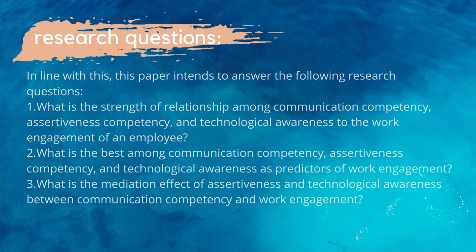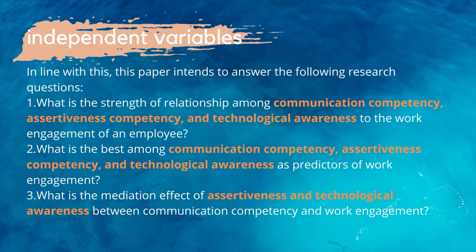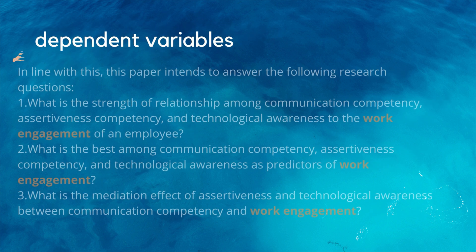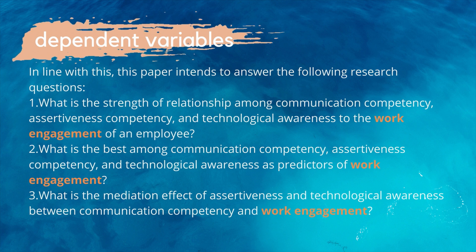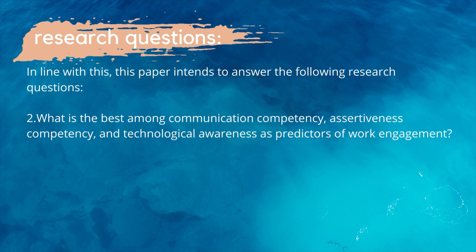The first step is to specify the variables needed in your research questions. For example, the independent variables are communication competency, assertiveness competency, and technological awareness, and work engagement is the dependent variable. All these variables are based on the research gap. In the first question, you are looking for the strength of relationship of each independent variable to work engagement. The second question will tell you which among the independent variables is the best predictor of work engagement.